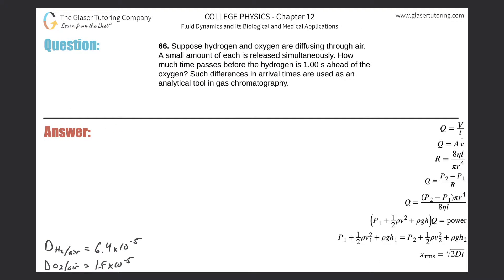Problem number 66: suppose hydrogen and oxygen are diffusing through air. A small amount of each is released simultaneously. How much time passes before hydrogen is one second ahead of oxygen? Such differences in arrival times are used as analytical tools in gas chromatography. This one seems a little complex.